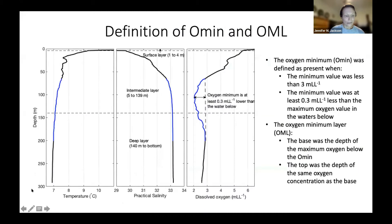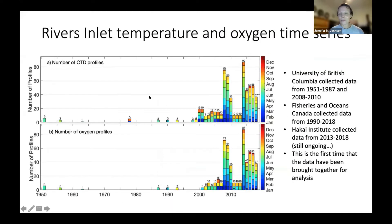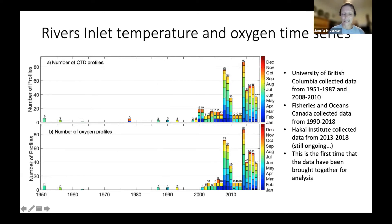What's also interesting about Rivers Inlet — and actually a lot of the inlets along the coast — is that there are really long time series. Pickard was a professor at UBC and he started collecting temperature, salinity, and oxygen data in most of the inlets in British Columbia in 1951, so there are these really beautiful, long time series, and Rivers Inlet is one example of that.